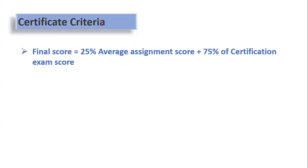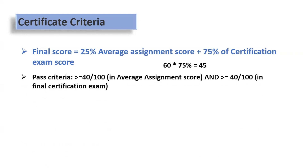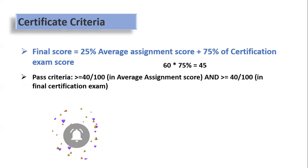First, coming to the certificate criteria. The final score will be made of 25% of average assignment score and 75% of the certificate exam score. That means if you get 60 marks out of 100 in the final exam, then 75% of 60, which is 45, will be added to your final score. You need 40 out of 100 to pass the exam, and in the assignments you also have to score 40.